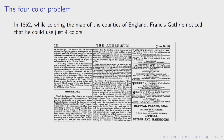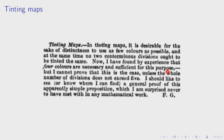Francis Guthrie was not a mathematician — he was a lawyer. He published this problem in the Athenaeum in 1854, with a little blurb on tinting maps. He says that in tinting — meaning coloring — maps, he wants to use as few colors as possible so that no adjacent regions share a color. He found by experience that four colors are necessary and sufficient for this purpose, but he couldn't prove it and wanted to know whether this was true.